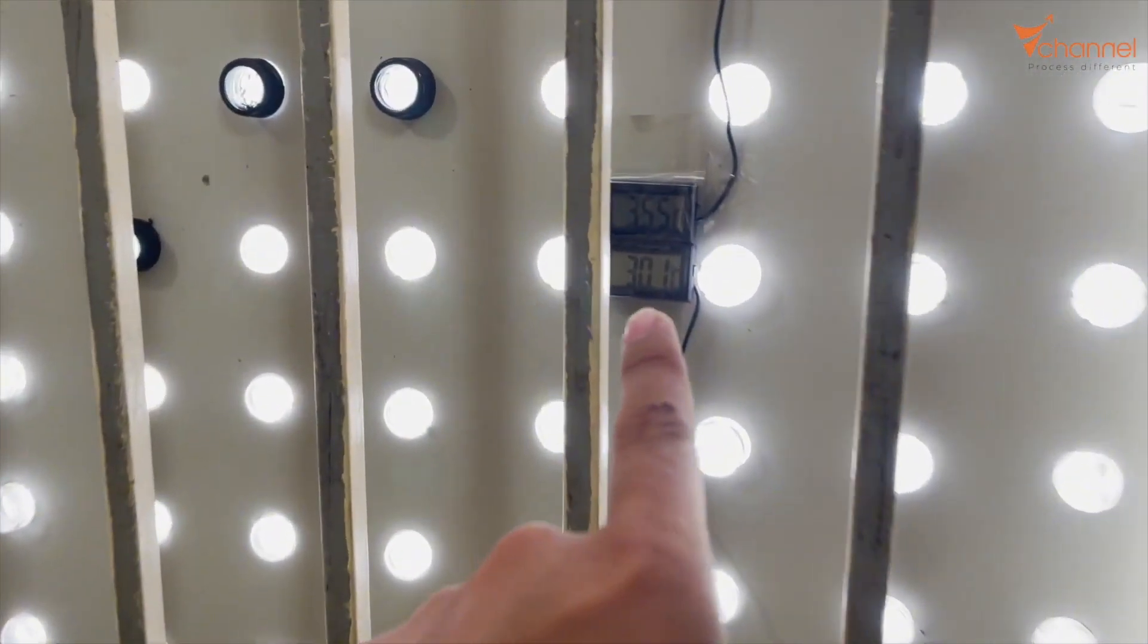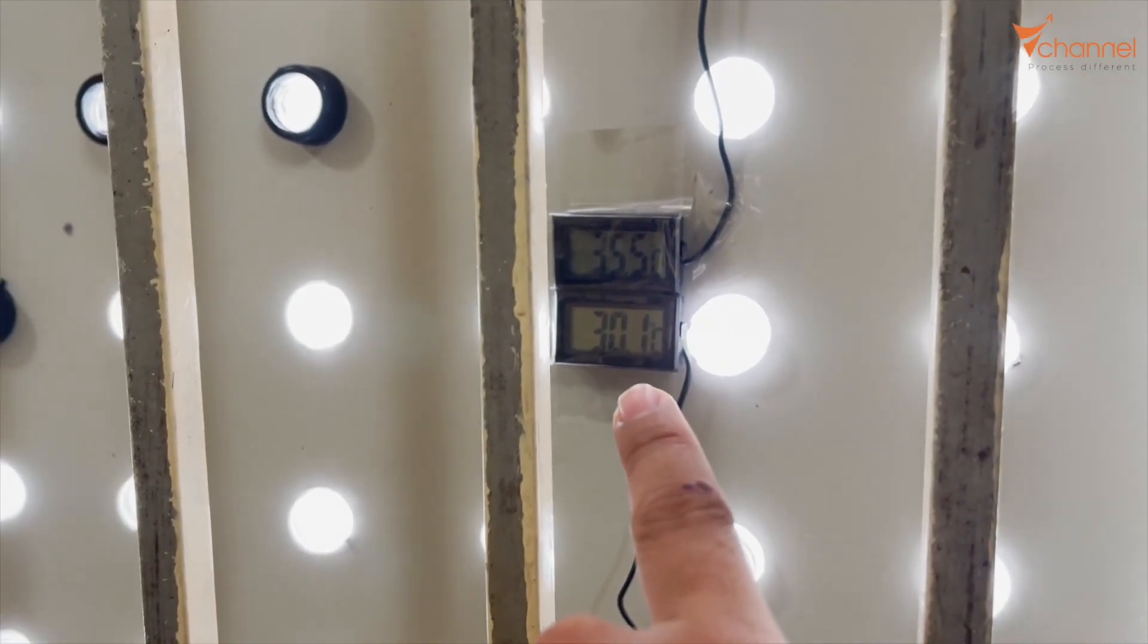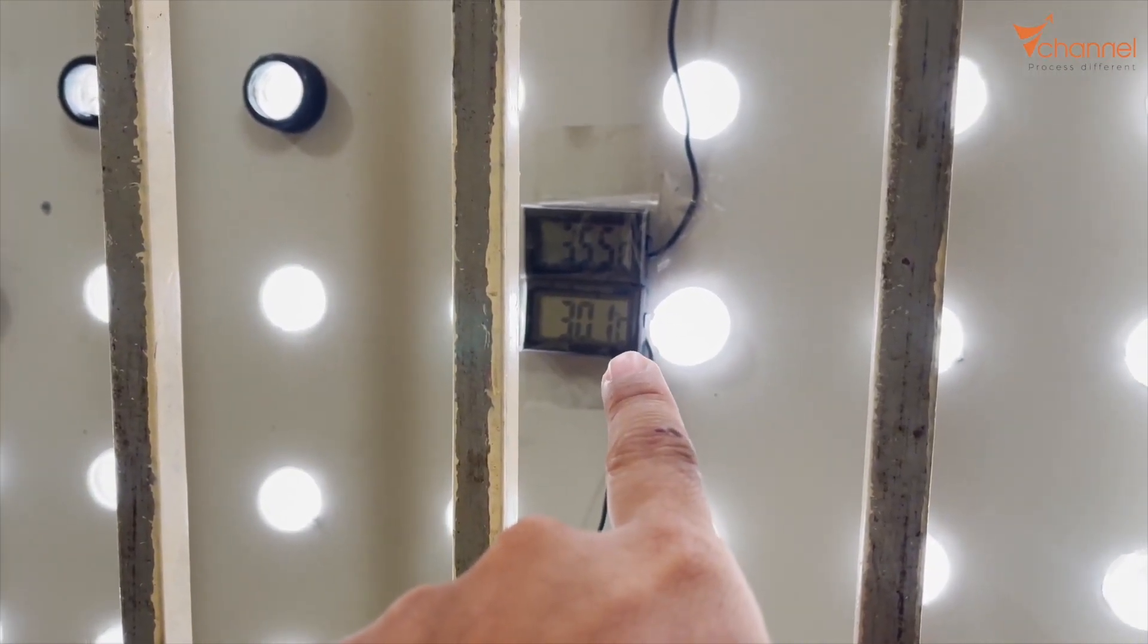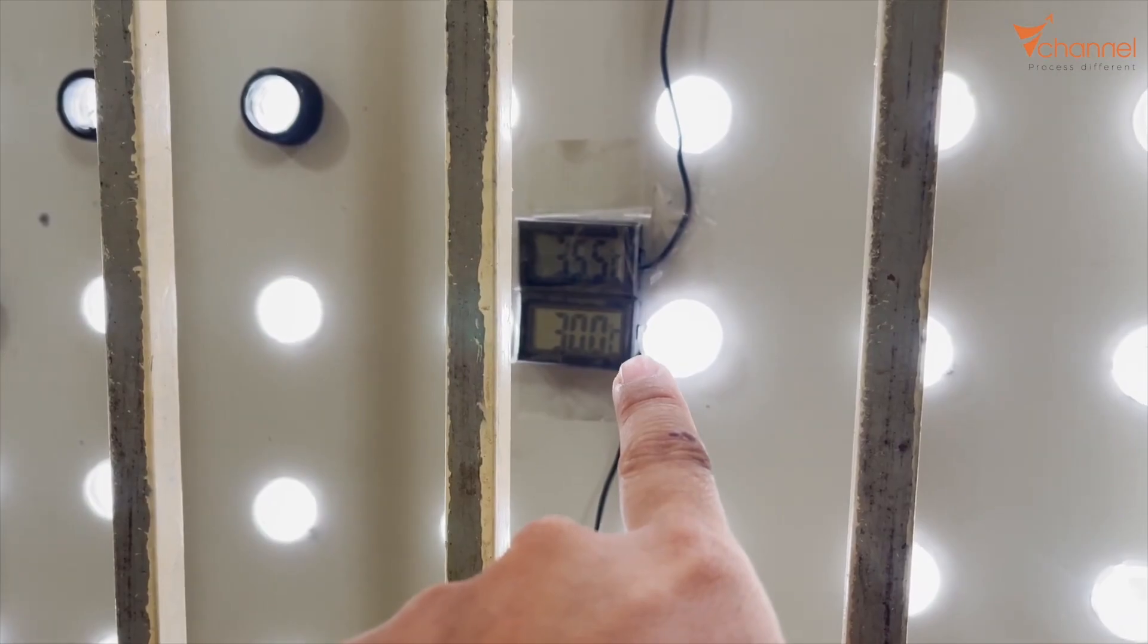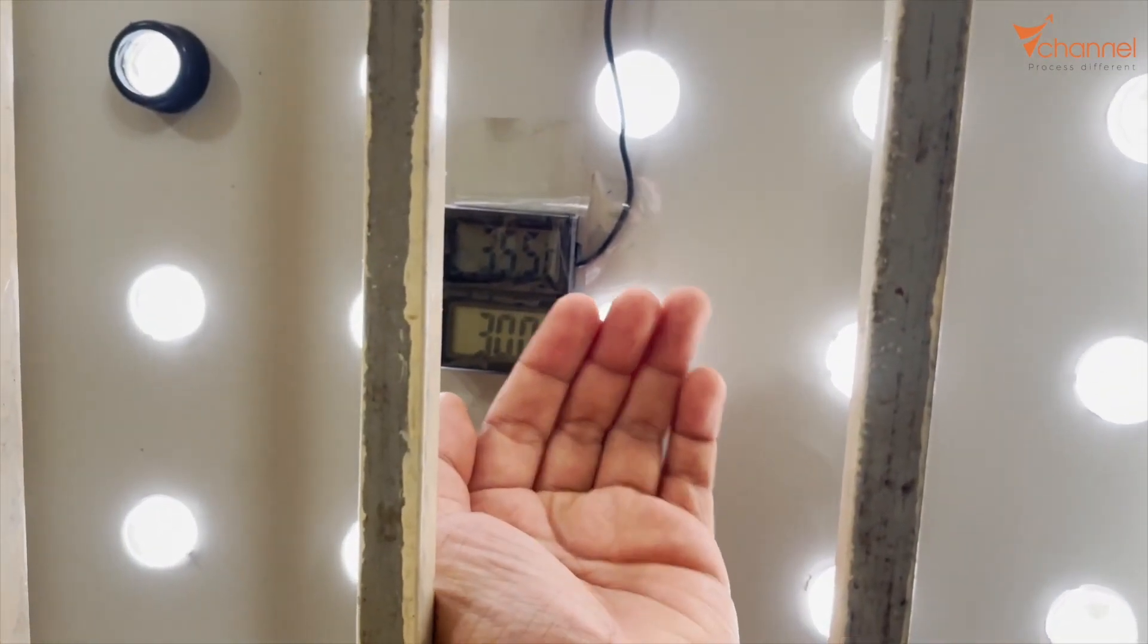And the difference is like this, guys. It's currently 35 degrees outside. The room temperature is only 30 degrees. Reduced to 30. The difference of 5.5 degrees is very significant and it doesn't use any electricity at all.